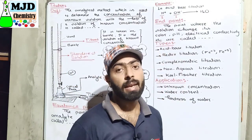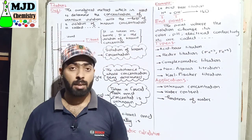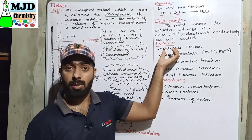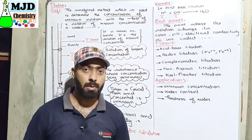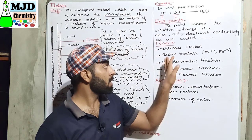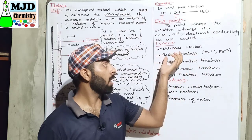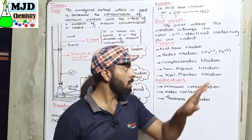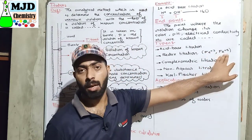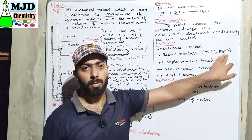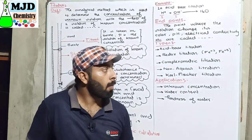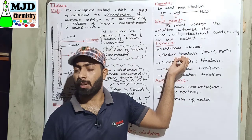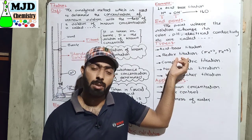Next are the types of titration. One common type is acid-base titration, which is commonly used in labs, schools, and colleges. Another type is redox titration. For example, if we have a solution containing both Fe²⁺ and Fe³⁺ ions and we want to determine the concentration of only one of these ions, we use redox titration.